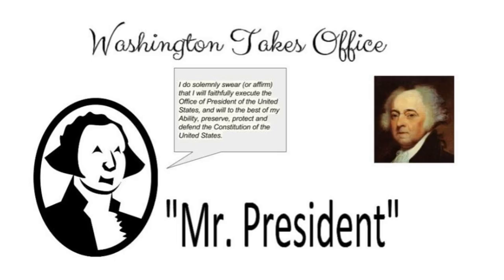Washington takes office. George Washington was inaugurated, or sworn in, as the nation's first president. John Adams became vice president. Washington faced a difficult task — he knew his actions as president would set an example. Congress agreed that Washington should be called Mr. President, rather than by a title that would suggest he was a king. Congress also had to settle differences about how to run the new government.